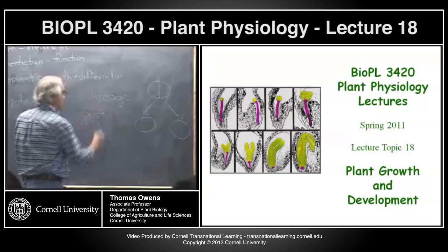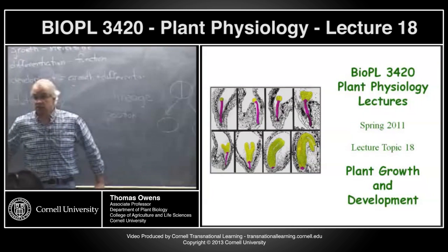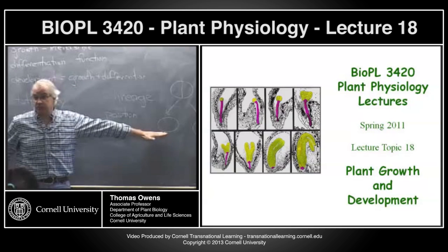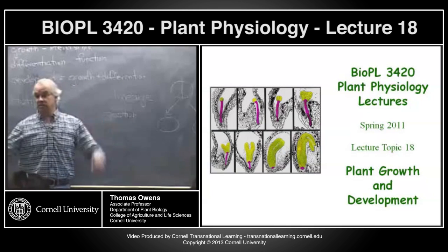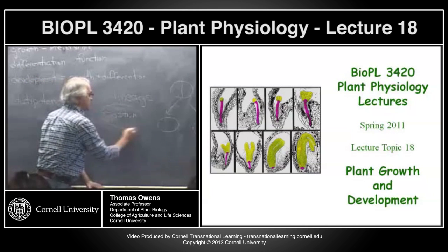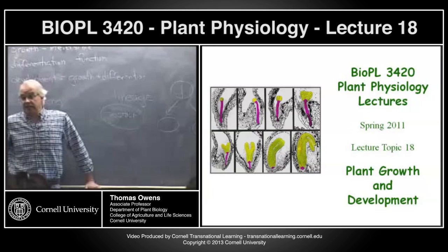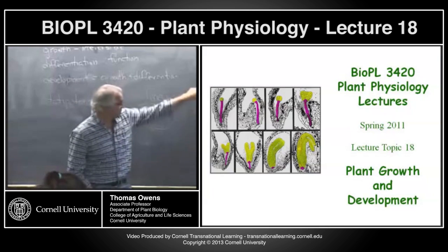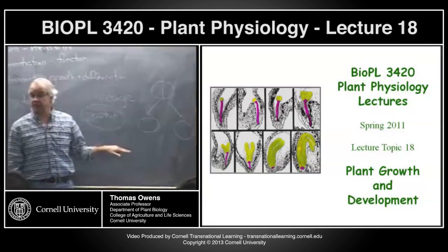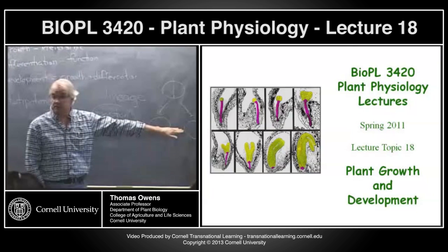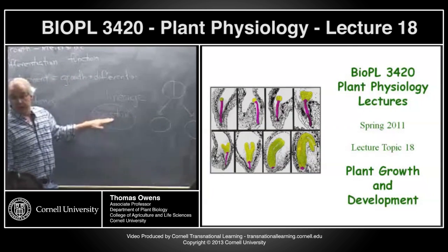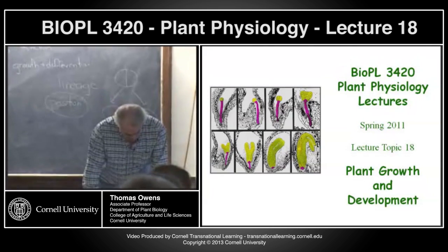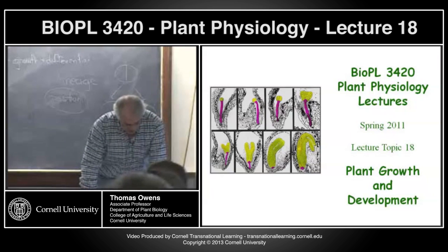In plants, the information that is important is related to position — information that's coming from neighboring cells. Those neighboring cells give a new daughter cell information about its position and therefore guide its development. So for plants, position is the key factor in terms of external information. The information inside these cells — except for the lineage-dependent stuff — is the same DNA. So for the most part, in plants it's going to be positional information that gives rise to changes in the developmental path a cell follows.